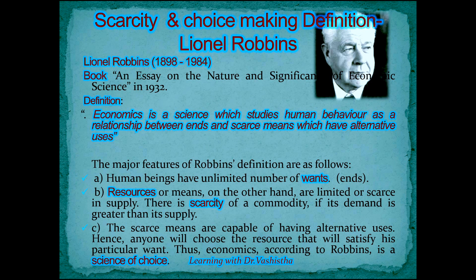According to Robbins, human beings have an unlimited number of wants, which he termed 'ends.' Resources, which he termed 'means,' are limited or scarce in supply. There is scarcity of commodities in the economy due to greater demand than actual supply. Since scarce means are capable of having alternative uses, anyone will choose the resource that satisfies their particular want. According to Robbins, economics is a science of choice.